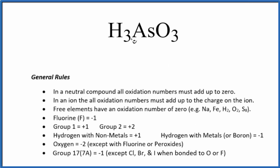In this video, we'll find the oxidation number for the As in H3AsO3. This is arsenious acid. To start out, there's no negative or positive sign after this molecule, so it is a neutral compound. All the oxidation numbers are going to add up to zero.